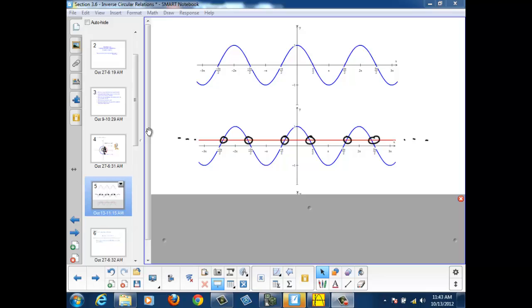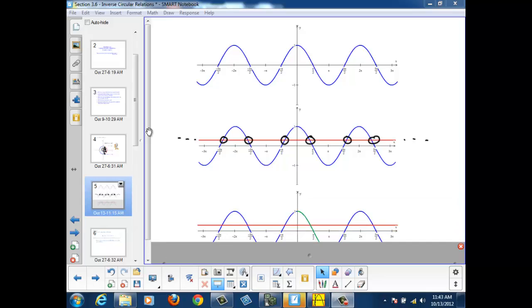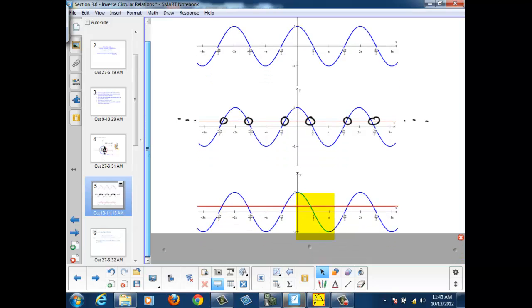What we're going to do is take a look at the fact that if we look at simply the principal branch solution, so our principal value for our solutions here, that's the area in green on our graph,